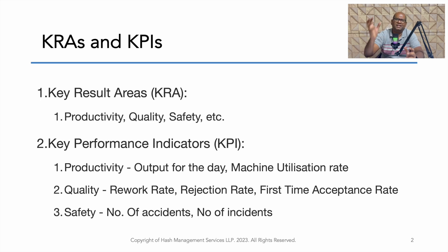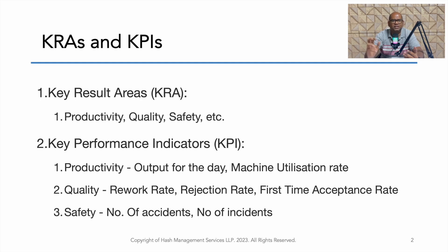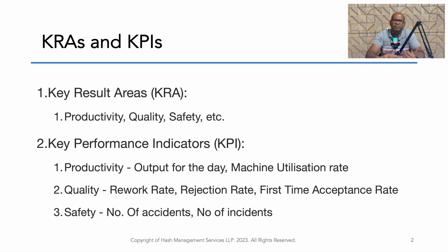KRAs are the broad results which we are trying to measure. For example, in the health analogy, health here is the KRA — the key result area. We are going to measure the health of a person, and the indicators for that are the BMI test, blood sugar level test, cholesterol, and ECG. These are all various indicators for health.